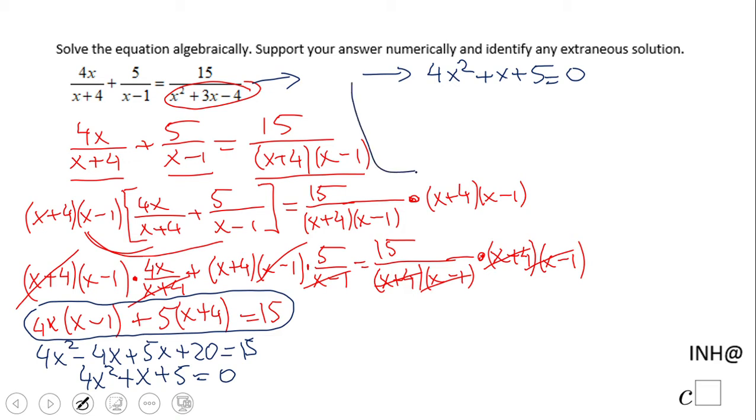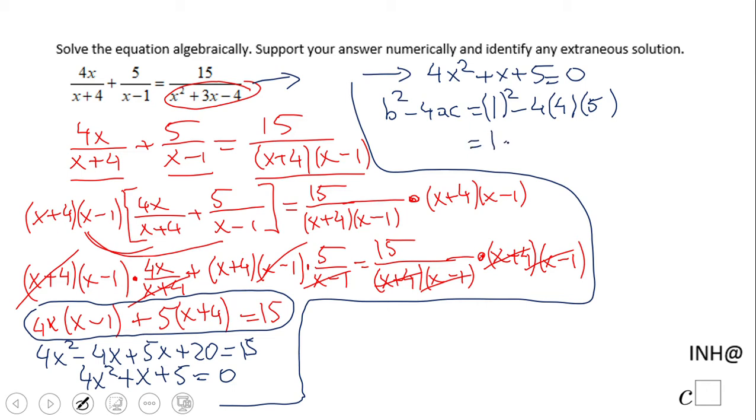When we have b squared minus 4ac, that will be 1 squared, minus 4 times 4 times 5. And that will be 1 minus 4 times 4 is 16, times 5 is 80. That is negative 79.